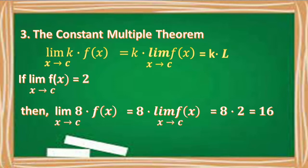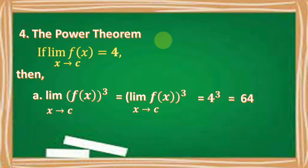For example, if the limit of f of x as x approaches c equals 2, then the limit of 8 times f of x as x approaches c equals 8 times the limit of f of x as x approaches c, which equals 8 times 2, equal to 16.